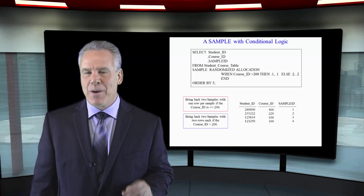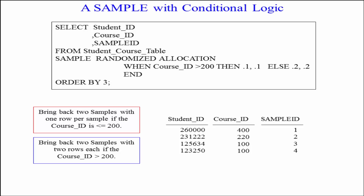You can get really specific about what you want to see in your sample. Take a look at this. We're going to select the student ID, course ID, sample ID from the student course table — RANDOMIZED ALLOCATION. But when course ID is greater than 200, we want two 10% samples. Else, if the course ID is 200 or less, we want two 20% samples. This should have brought back probably six rows, but we couldn't find enough rows with a course ID at 200 or less. But normally, if you've got the rows, this would have worked perfectly.